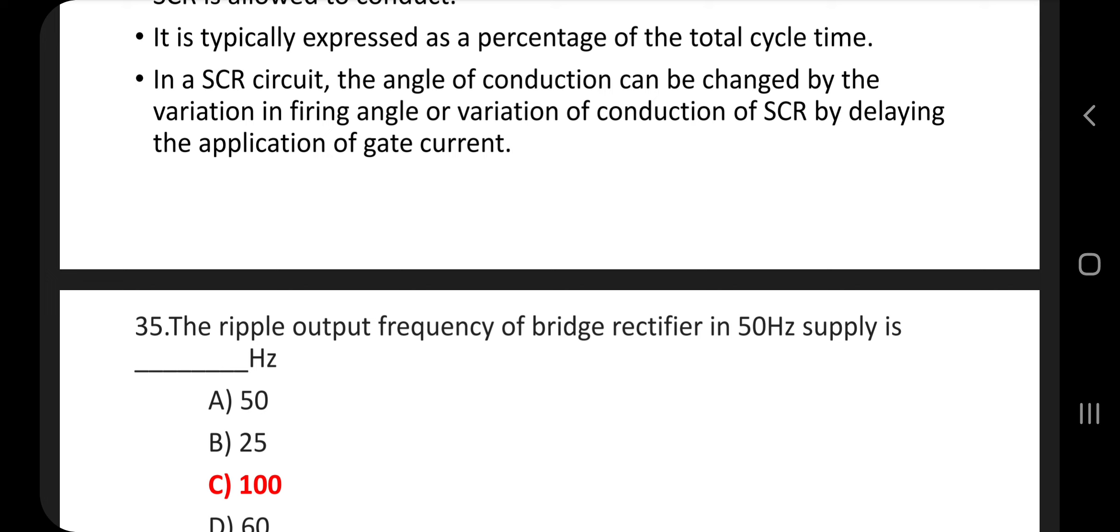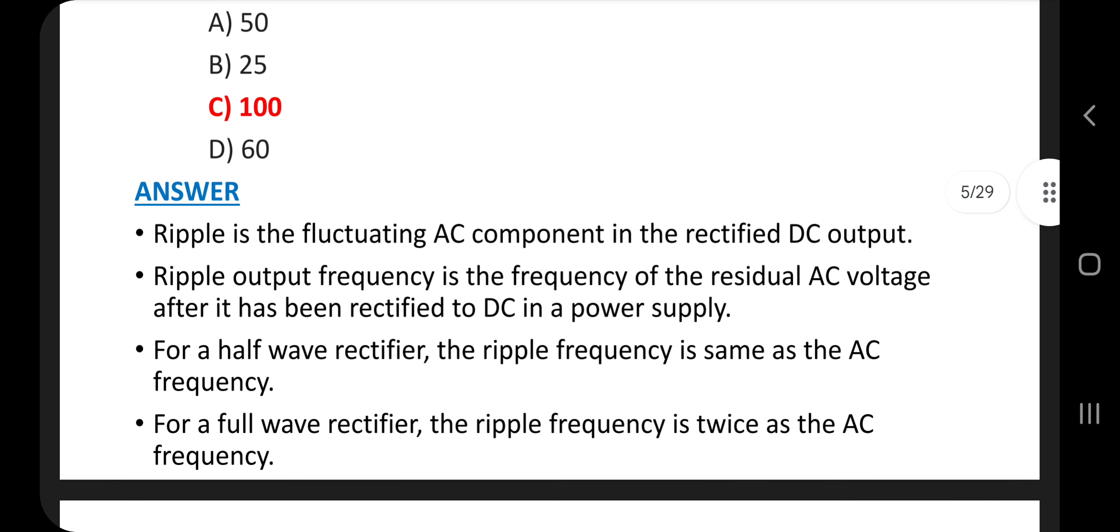Question number 35. The ripple output frequency of the bridge rectifier in 50 Hz supply is, answer is option C, 100. Ripple is the fluctuating AC component in the rectifier DC output. Ripple output frequency is the frequency of the residual AC voltage after it has been rectified to DC in a power supply. For a half-wave rectifier, the ripple frequency is same as the AC frequency. For a full-wave rectifier, the ripple frequency is twice the AC frequency.